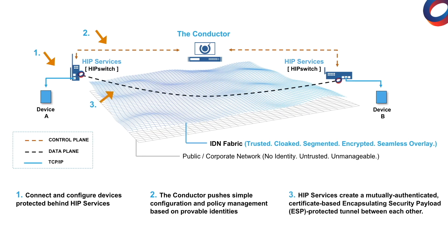Step 3: After being whitelisted for communication, the HIP services build a tunnel between them for encrypted communications. A couple things that are important to note is that no traffic passes through the conductor — it merely defines policy for HIP services. It can go offline and all HIP services will continue to function as normal. And with HIP services, they can protect devices in a one-to-one or one-to-many deployment. It just depends on throughput.